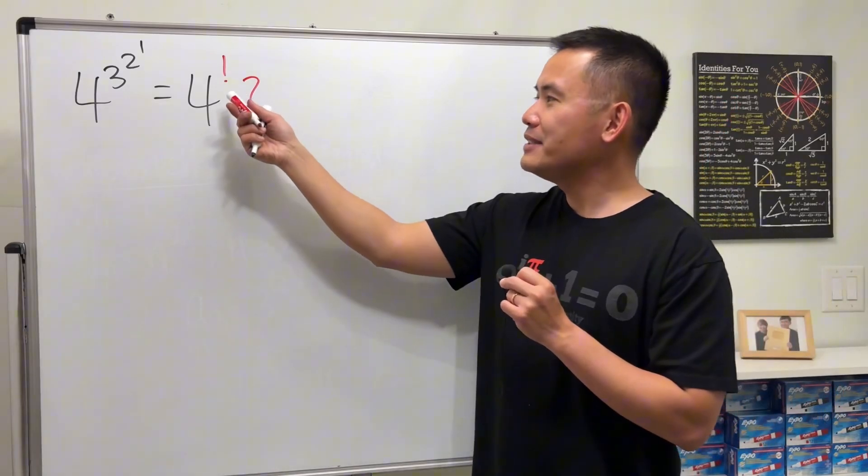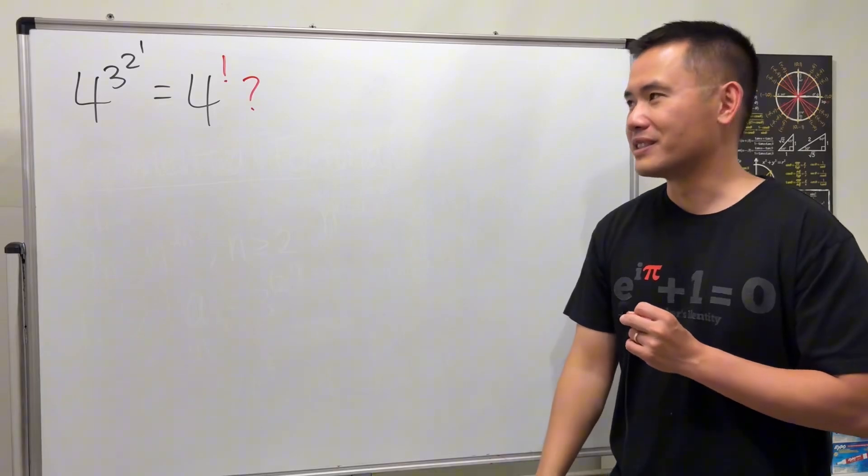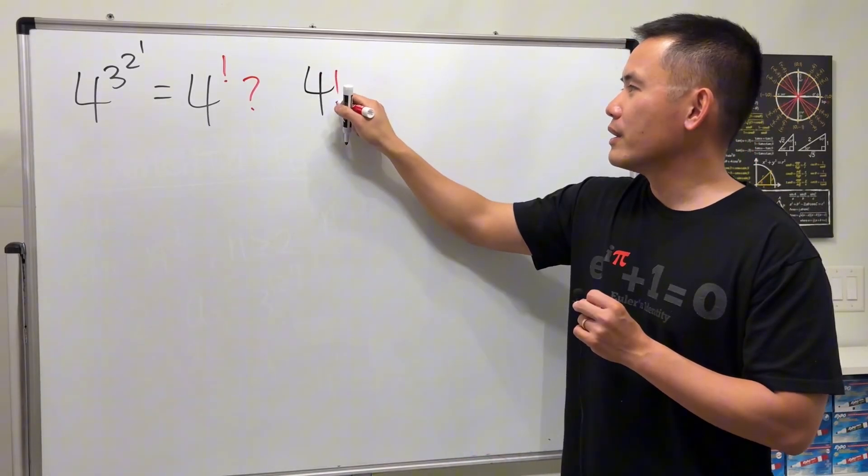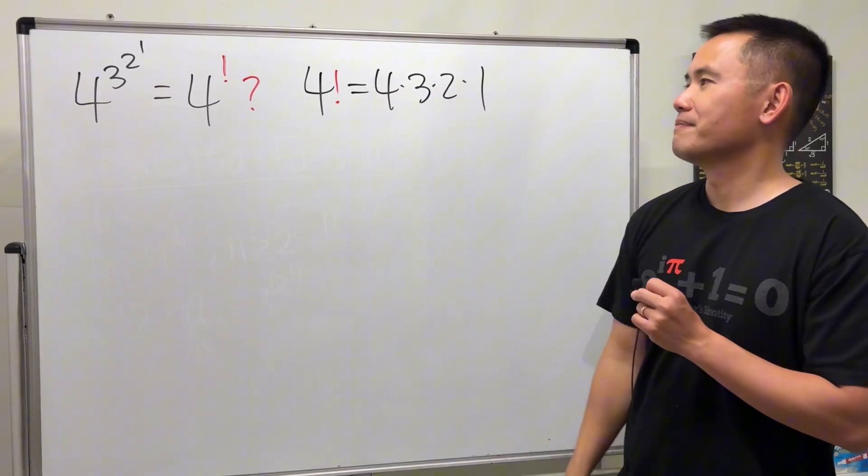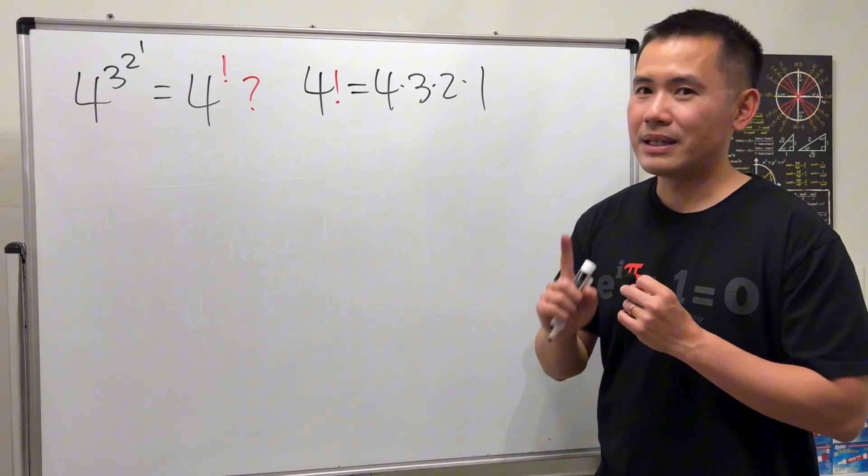However, I know what you're trying to say when you put something down like that, which is pretty creative I would say. Because of course we know if we have four factorial the usual way, this is just four times three times two times one.